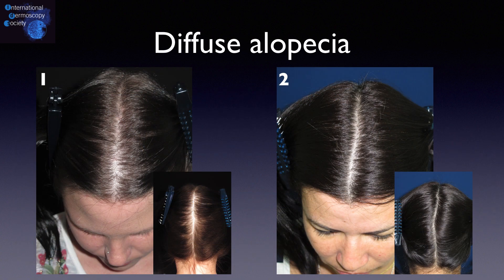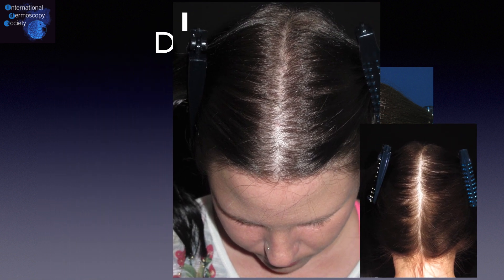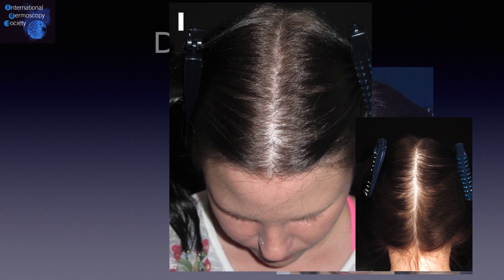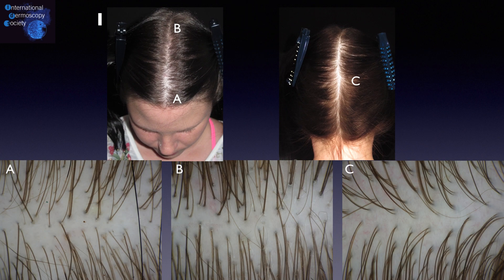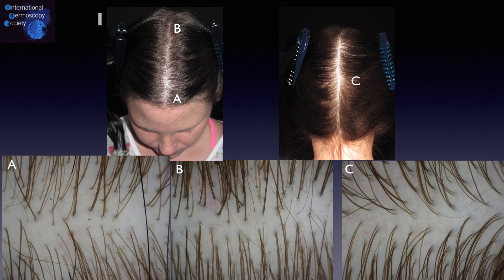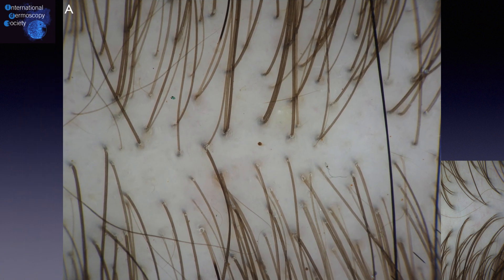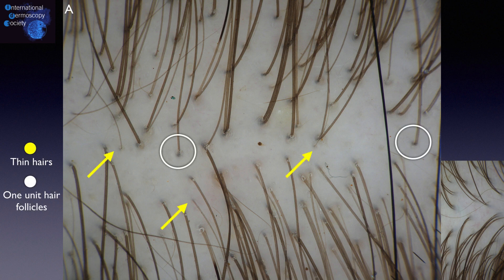Now the last two cases of diffuse alopecia. In the first one, we can see a discreet hair loss in the frontal area. To evaluate diffuse alopecia, we need to compare at least three areas in trichoscopy. The first is the frontal area, represented by letter A. Here we can see decreased hair density, many thin hairs, and many one-unit hair follicles.